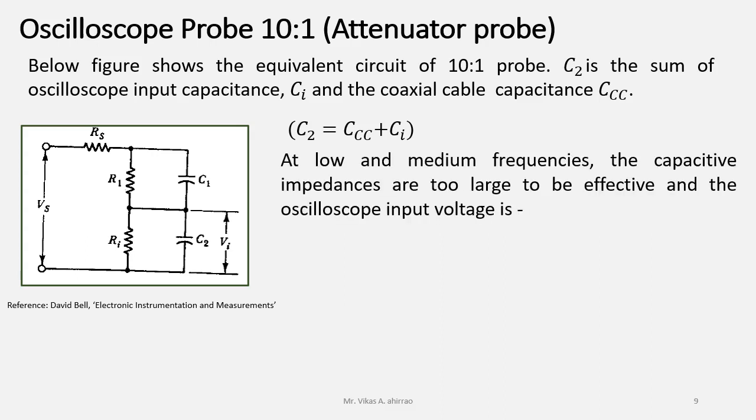At low and medium frequencies, the capacitive impedances are too large to be effective. And the oscilloscope input voltage is Vi equals Vs times Ri upon R1 plus Rs plus Ri, because the capacitances are having greater impedances.